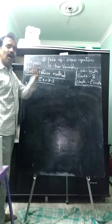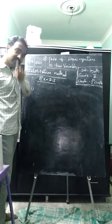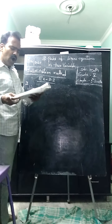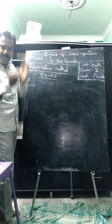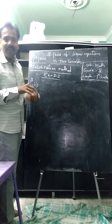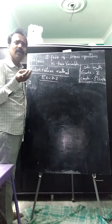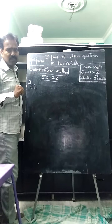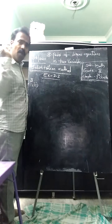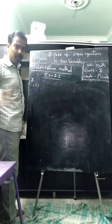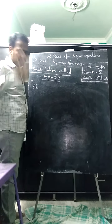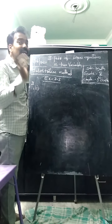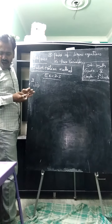In this exercise, some word problems are given. Read the question thoroughly and frame the linear equations in two variables. The second problem: the larger of two supplementary angles exceeds the smaller by 18 degrees — find them. You should know two concepts here: supplementary angles sum to 180 degrees, and complementary angles sum to 90 degrees. But in this problem, it is supplementary angles.